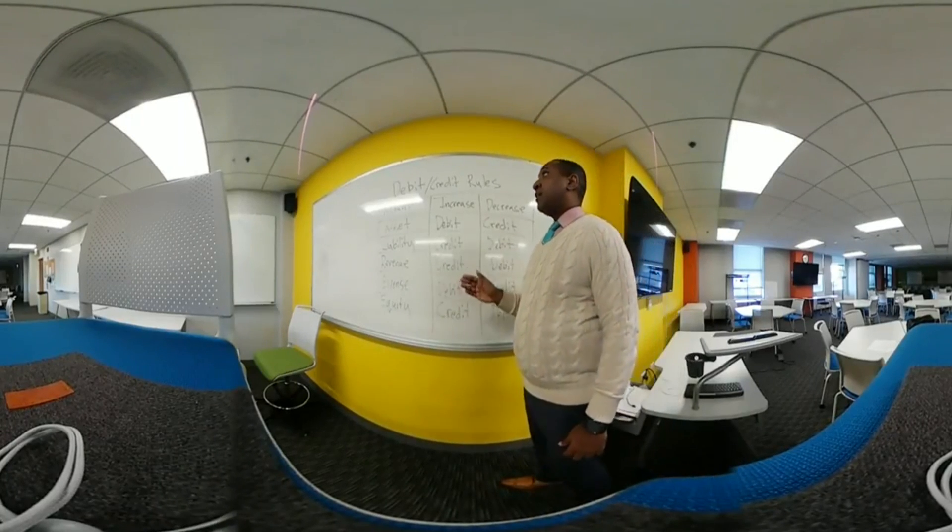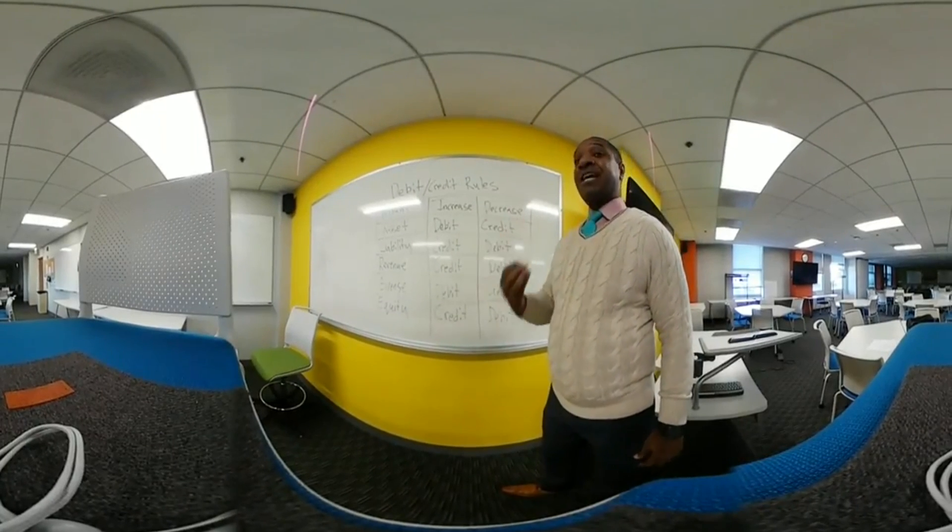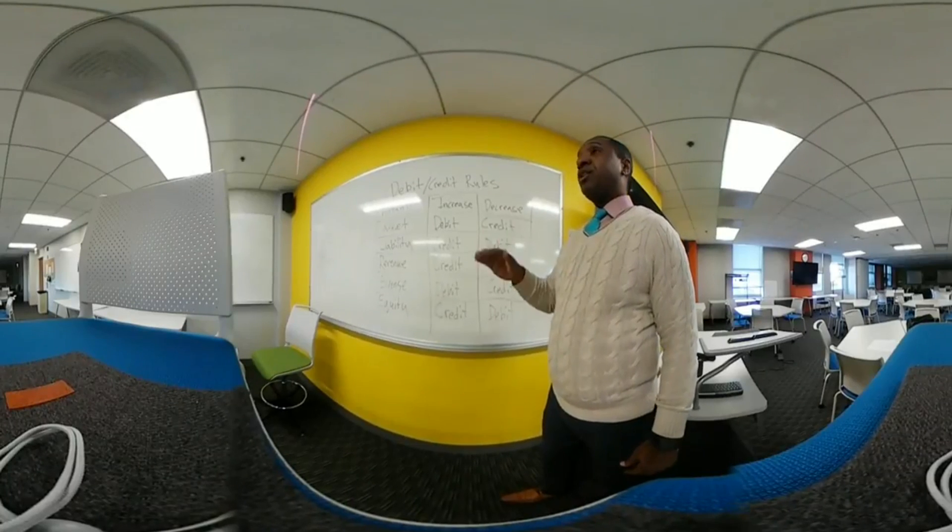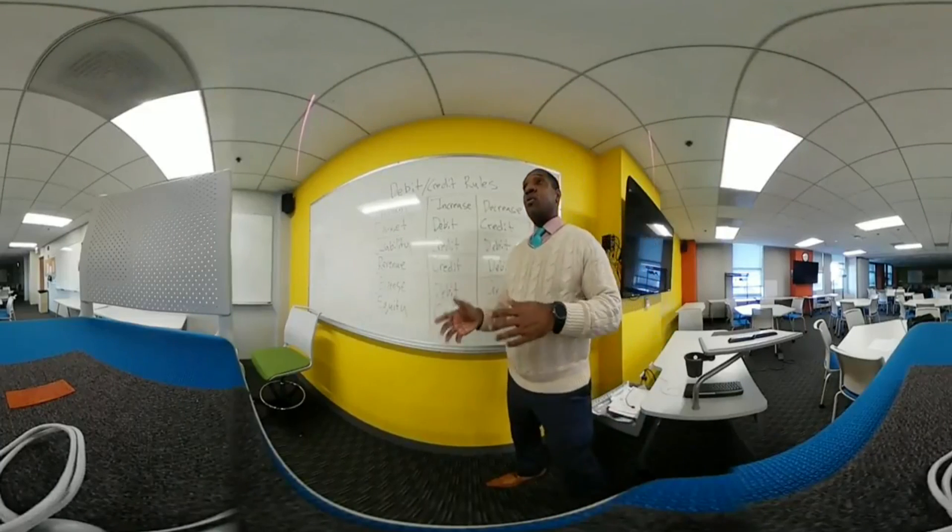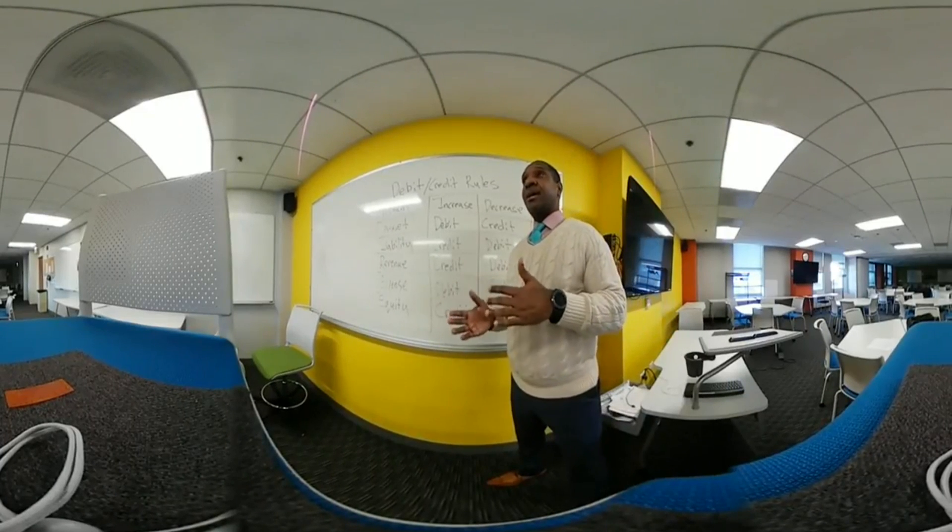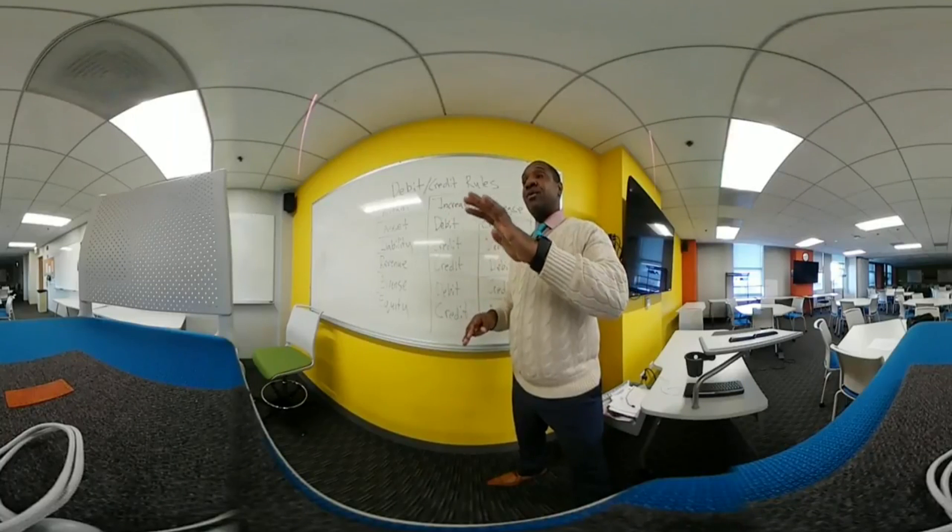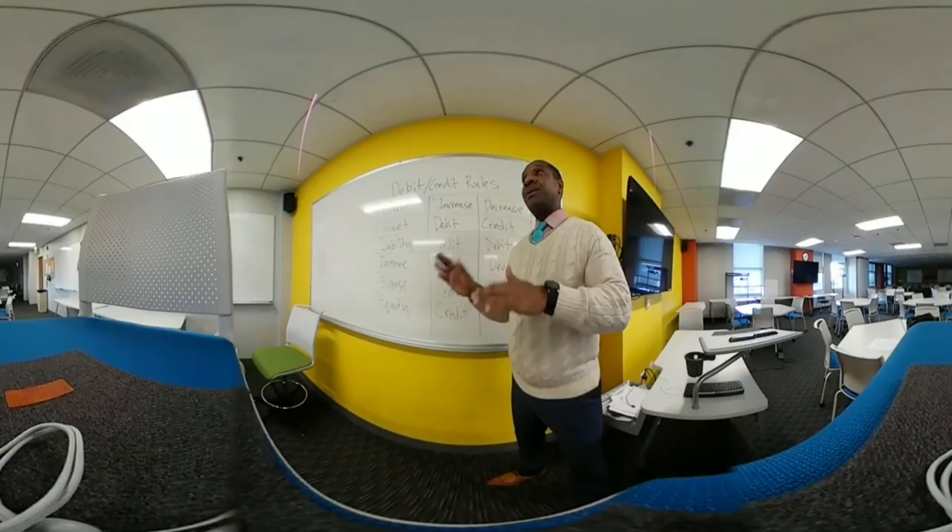What we've got here breaks down the different types of accounts and how you would either increase or decrease with debits or credits. Remember when we talked about T-accounts: the debit side is the left side, the credit side is the right side. But depending on the type of account...